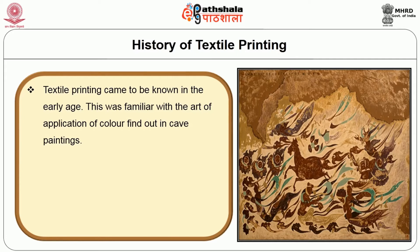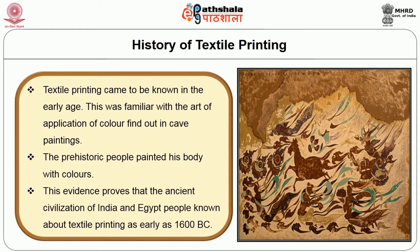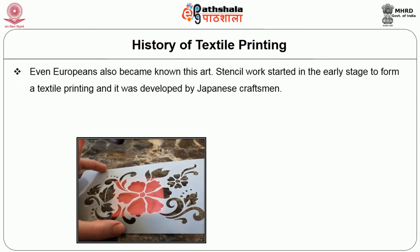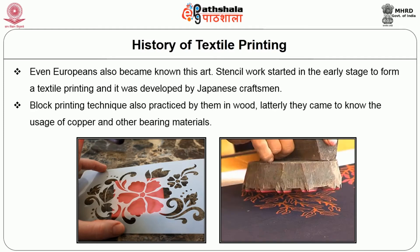Evidence from cave paintings shows that prehistoric people painted their bodies with colors. This evidence proved that the ancient civilizations of India and Egypt knew about textile printing as early as 16,000 BC. European peoples also became known to this art. Stencil work started in the early stage to form textile printing and was developed by Japanese craftsmen. Block printing techniques were also practiced, initially in wood, and later they came to know the usage of copper and other materials.